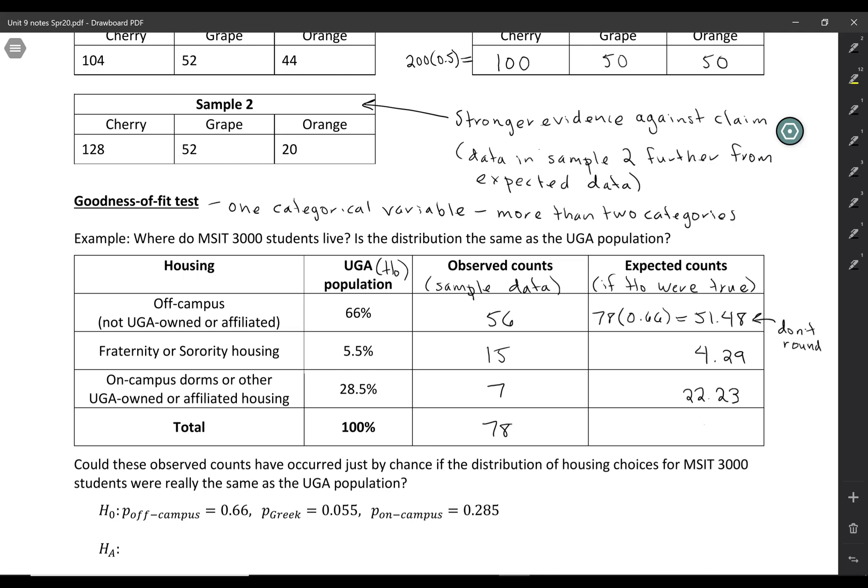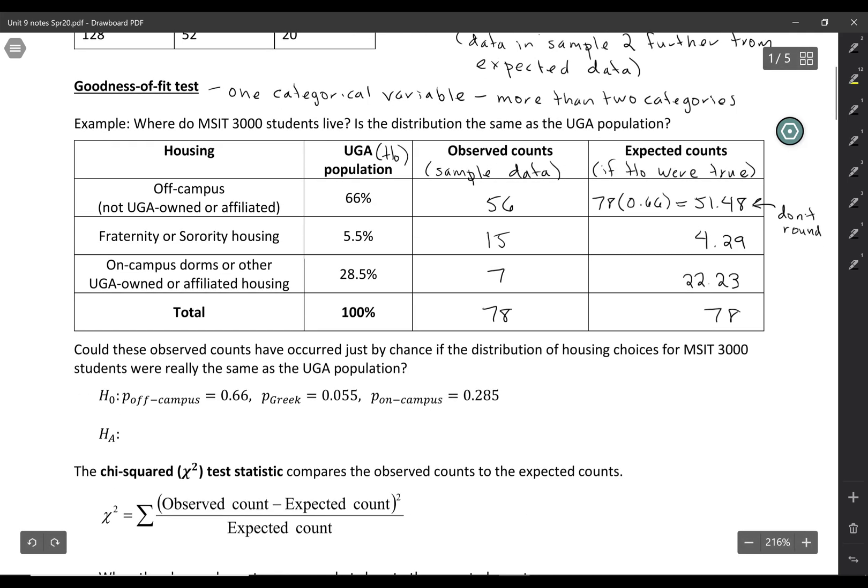And again, the expected counts are going to add up to the same sample size. So still 78 here. So we can see that our observed and expected counts aren't exactly the same, but the question is, could these have occurred just by chance if the distribution for MSIT students were really the same as the UGA population, right? Maybe they just didn't match perfectly just by random chance.